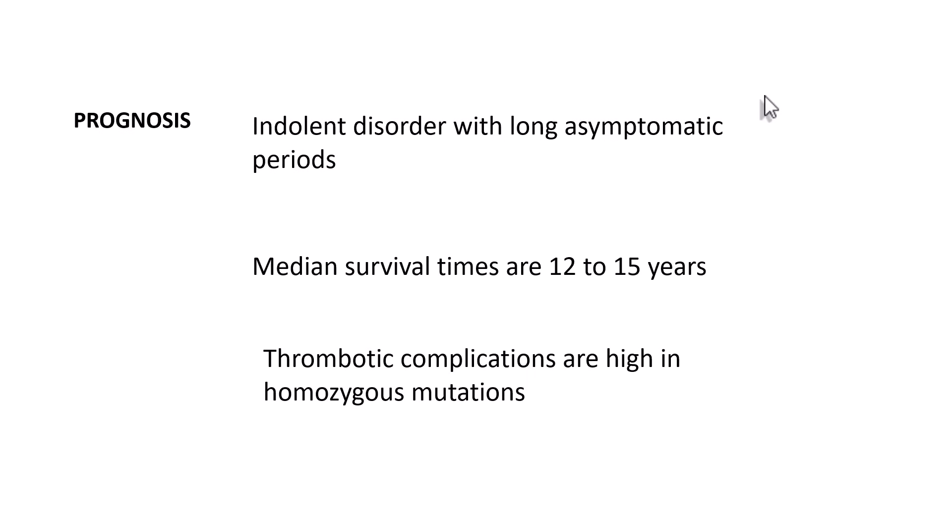Regarding prognosis, essential thrombocytemia is a very indolent disorder with long periods of asymptomatic disease — patients do not have significant clinical features for long durations. It is not as aggressive as chronic myeloid leukemia or polycythemia vera, and the median survival is very long at around 12 to 15 years. Thrombotic complications are particularly more evident when you have homozygous mutations — where both copies of the gene are mutated — which leads to a higher incidence of thrombotic complications.